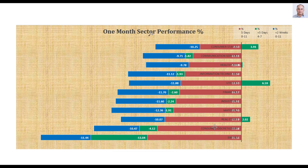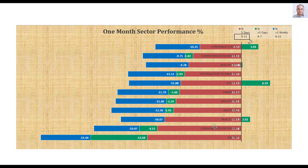Now let's look at the sector performance. I am looking at the 11 sectors across three review periods. The red bars represent this week's performance, green bars previous week's performance, and blue bars the performance two weeks before that. The sectors are very bearish — all sectors declined, and as the red bars show, they declined by very large percentages. The sector graph is clearly bearish.